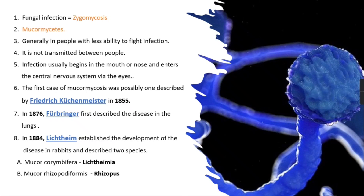Generally, mucormycosis is seen in people with less ability to fight infection — in simple words, people with less immune power in their body. One important point to remember is that black fungus cannot be transmitted from one person to another person, unlike COVID-19, which can be transferred from one person to another. Black fungus cannot be transmitted.